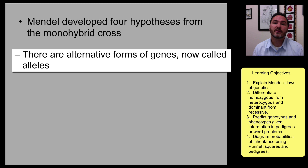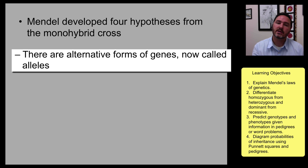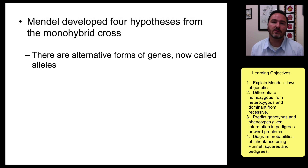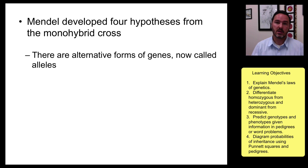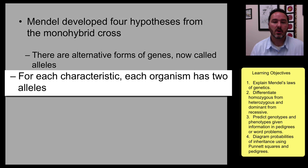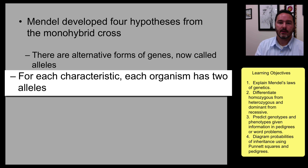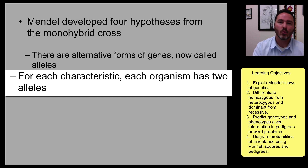First is that there are alternative forms of genes — he called these initially elements, but now we call them alleles — and that each characteristic has two forms. The gene is the characteristic and the alleles are the forms of the characteristic. So there's a gene for pea flower color, and there are two different alleles: it can be either purple or white. He also proposed that for each characteristic, each organism has two alleles. In the hybrid, he knew it had one element from the purple pea plant and one from the white pea plant, and you didn't see the white because it was covered up by the dominance of the purple.